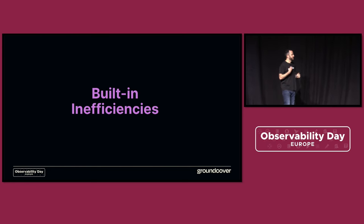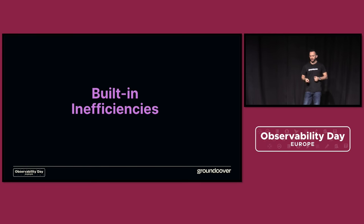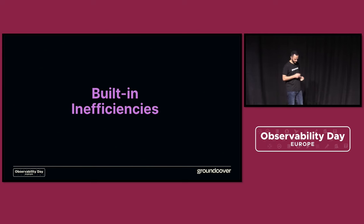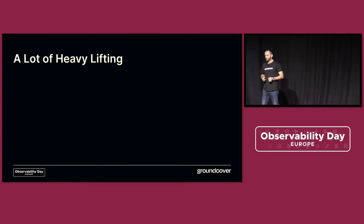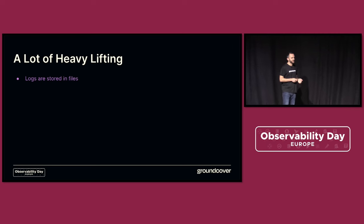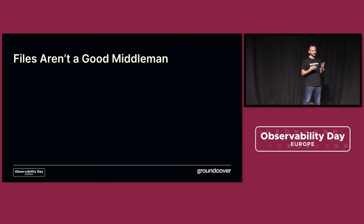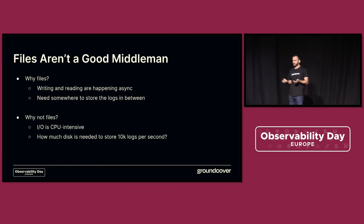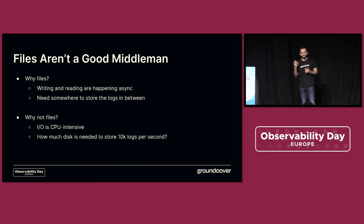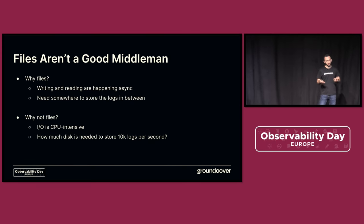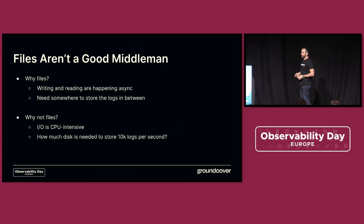Even though this method works really well, there are some inefficiencies. First, we're using files. Files are not a great middleman in terms of performance. Even though you need to use files here because writing and reading are asynchronous, file I/O is obviously CPU-intensive, especially when you're continuously doing that for every log line all the time. And think about the amount of disk space you need on each node to store all the logs — you're probably storing them for a long time because you don't know when someone will query them.